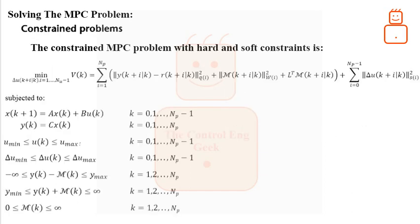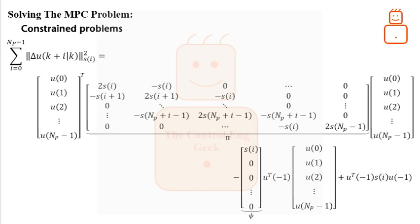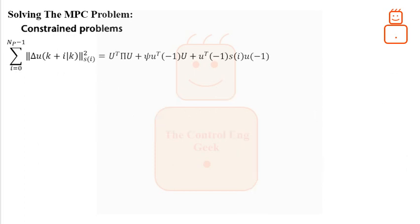this term is formulated as the last step shown below, where the formula is the formula of quadratic function. Let us take another term which is the control changes. We need to formulate this term as a quadratic function as well. To do that, we can expand it as shown.